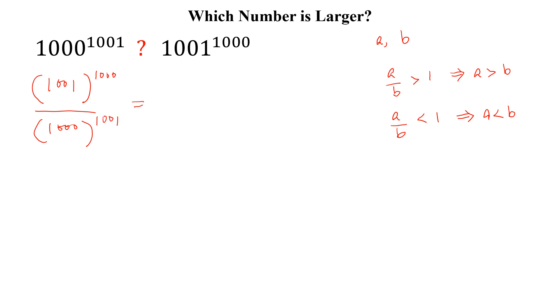We can write this as 1 over 1000 times 1001 divided by 1000 to the power 1000.